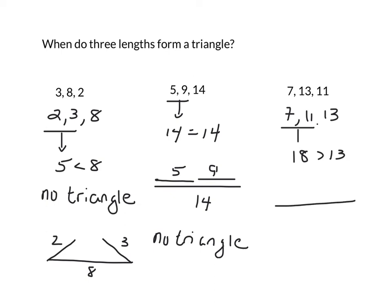And if we lay the longest side down as 13, we can see that when we have 7 coming up from one endpoint and 11 coming up from the other endpoint, they are indeed long enough to create a path that connects. So those two lengths can form a triangle with length 13.